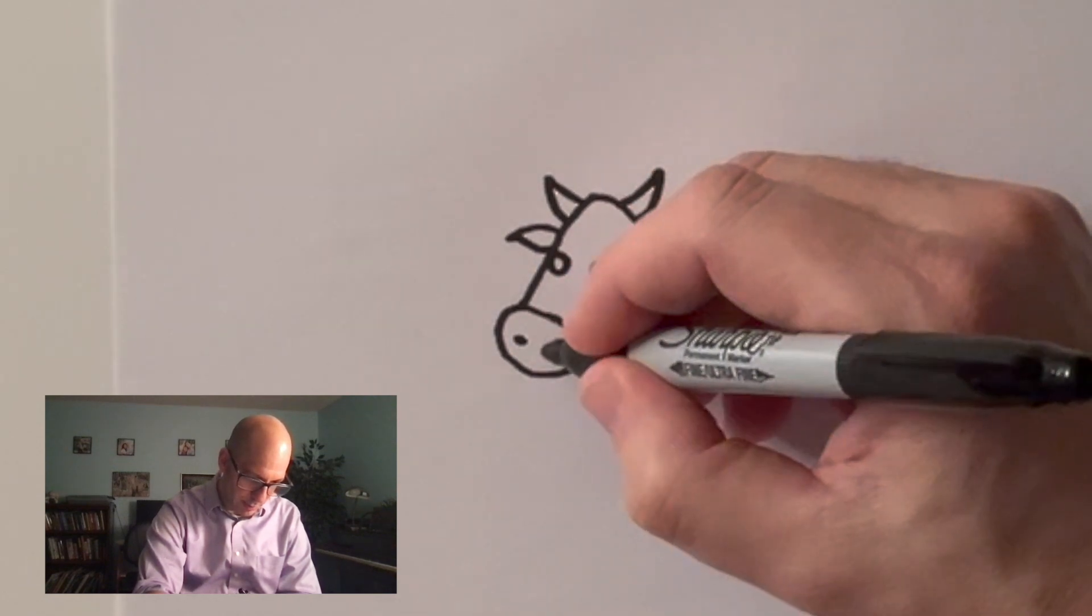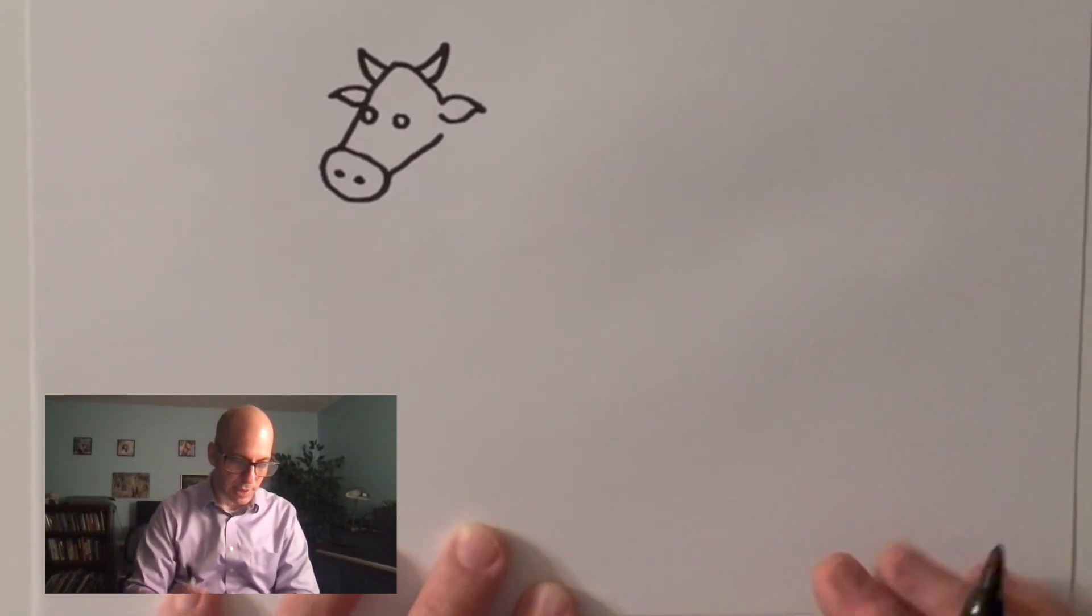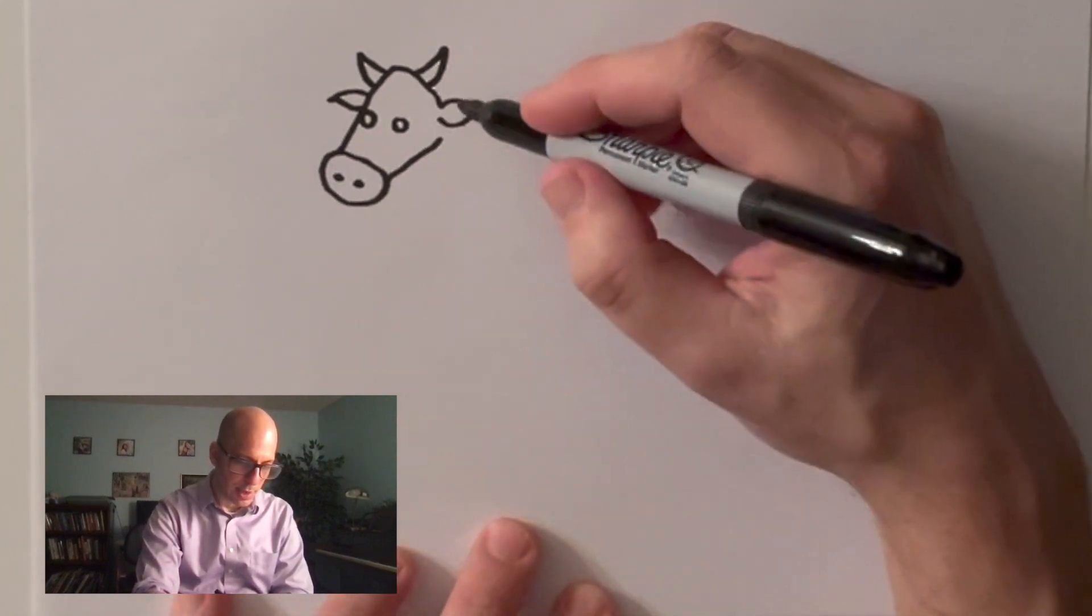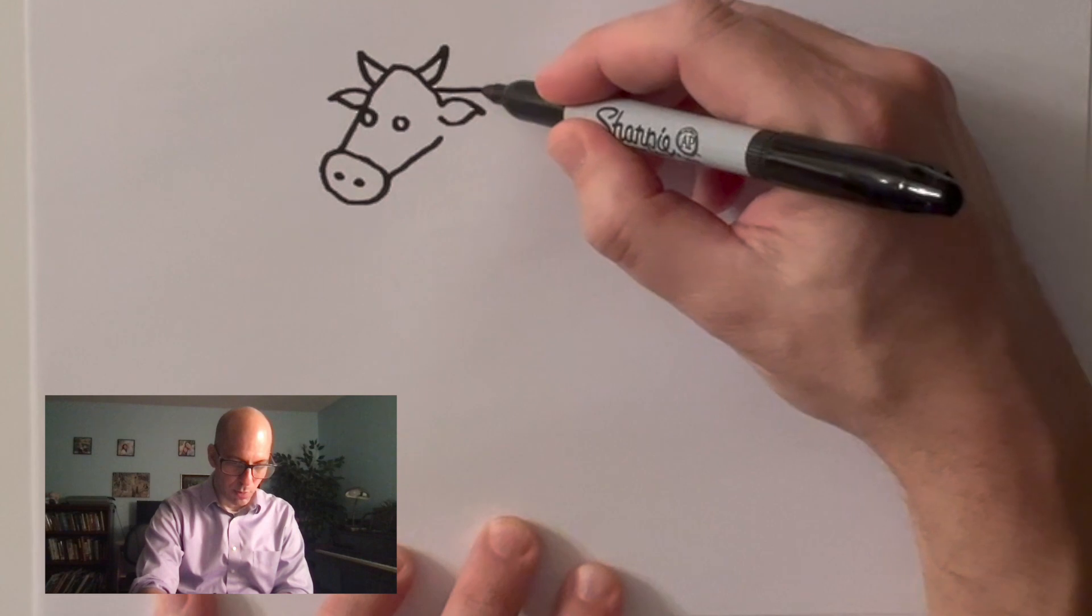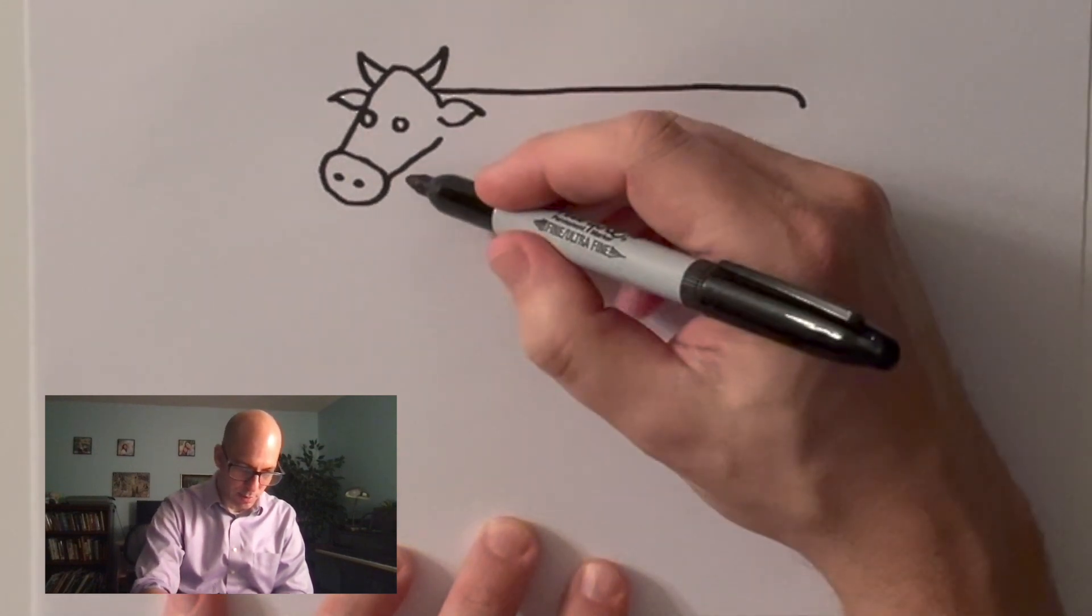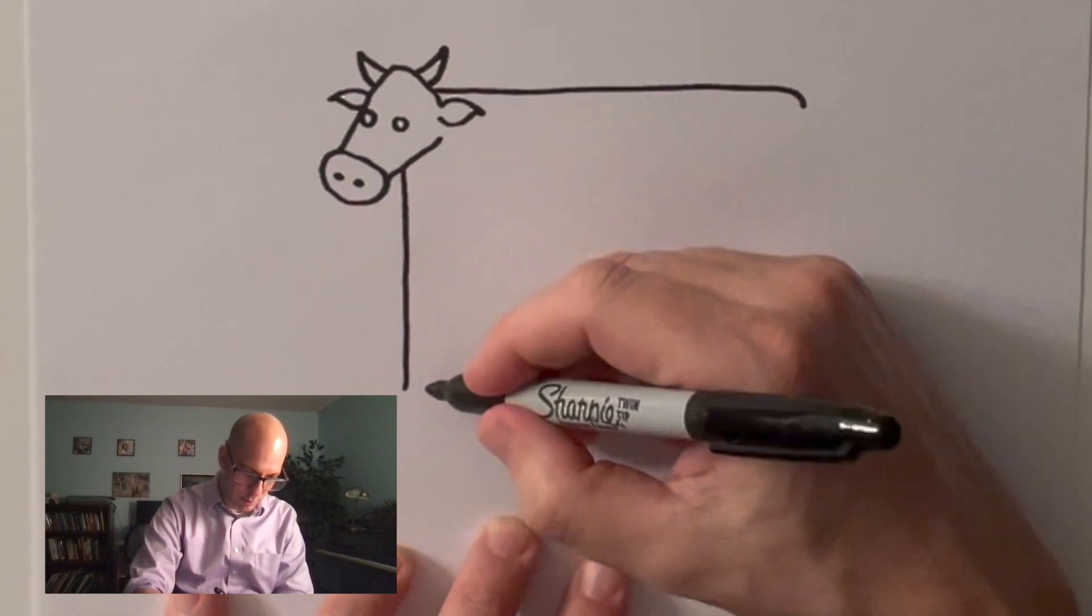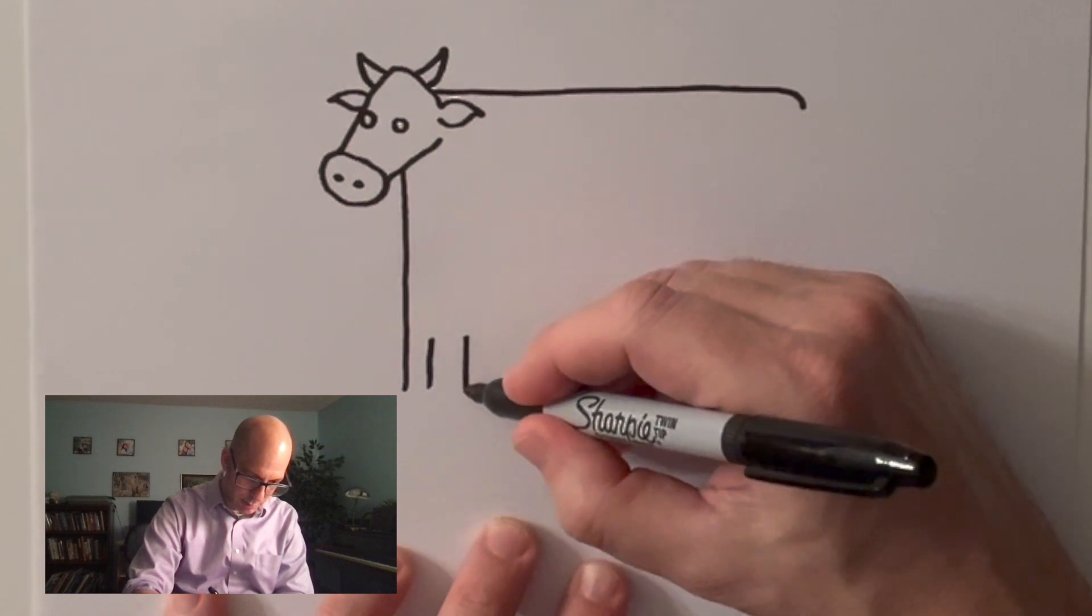And down here some nostrils. Where's my cow head? Now, cow bodies - I don't really know much about how to draw cows other than I like to make them rectangles. And I think the more rectangular they are, the funnier. The more rectangular, the better. So here's my rectangle cow.